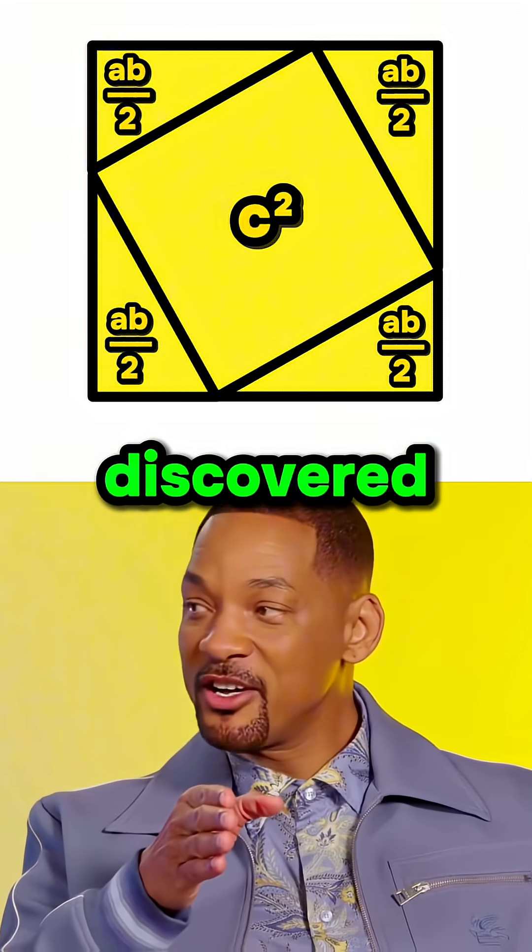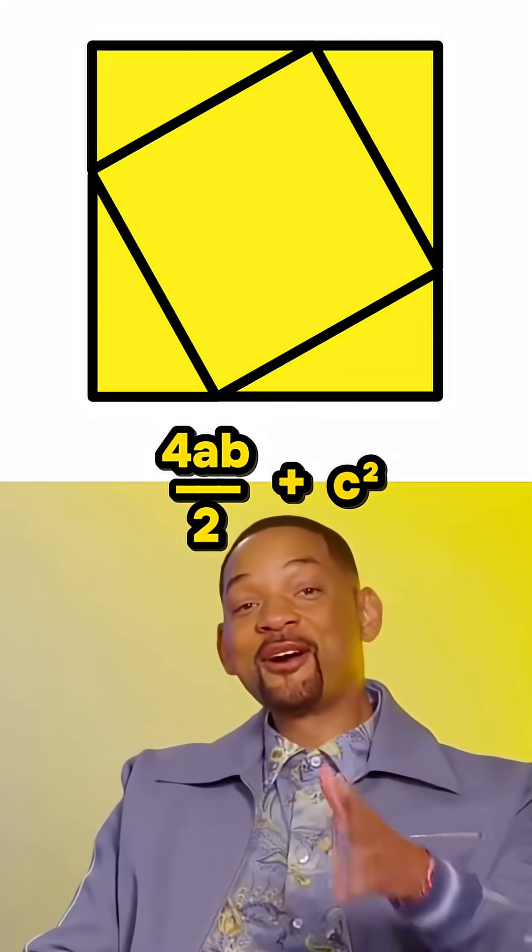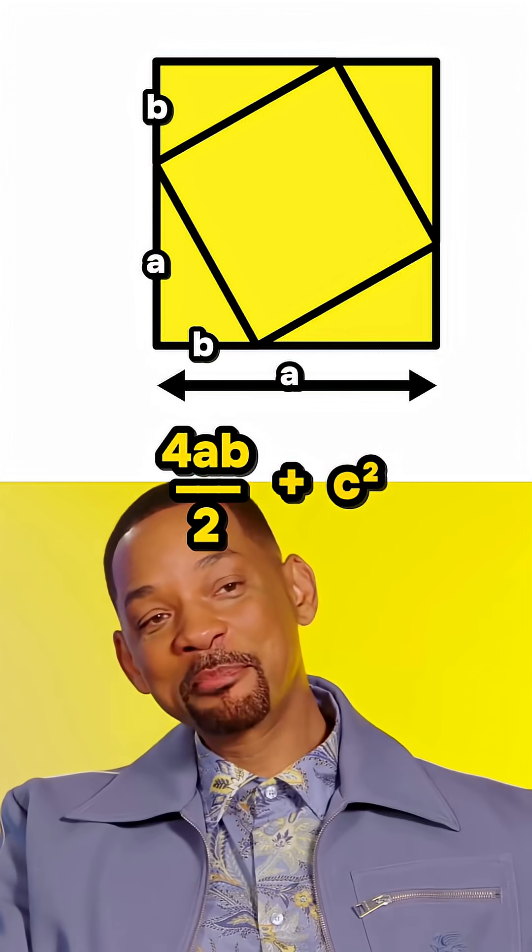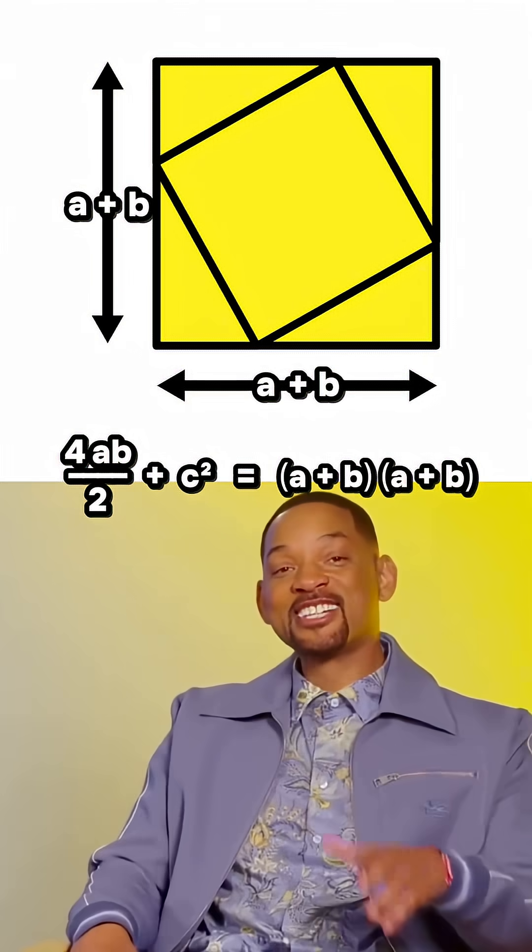Well, we just discovered that the area of this big square is four AB over two plus C squared. But look, its area would also be A plus B times A plus B. Oh, so is this an equation now? Exactly.